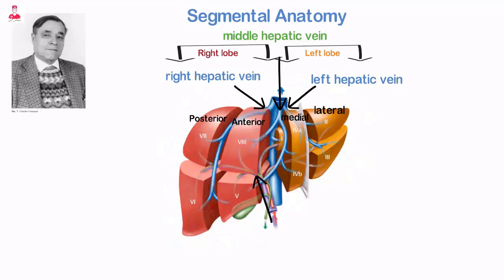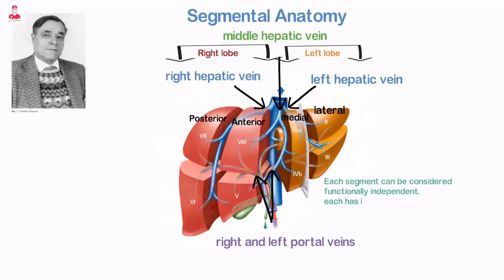Each section is then subdivided transversely by the right and left portal veins, creating eight segments. Each segment can be considered functionally independent — each has its own branch of the hepatic artery, portal vein, and bile duct, and is drained by a branch of the hepatic veins.